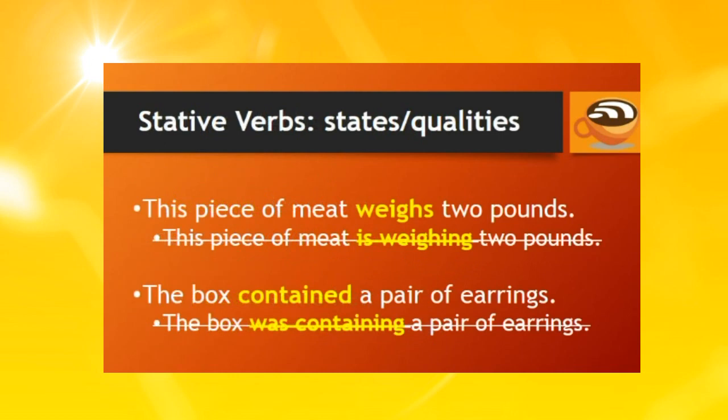Here are a couple more examples of stative verbs describing states or qualities. This piece of meat weighs two pounds — not 'this piece of meat is weighing two pounds.' The box contained a pair of earrings — not 'the box was containing a pair of earrings.'